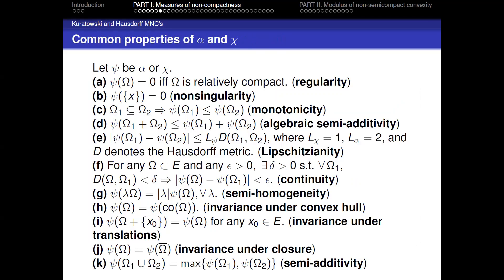There are also common properties of α and χ. Let C be either α or χ. The first property is regularity: C(Ω) = 0 if and only if Ω is relatively compact. Other common properties include non-singularity, monotonicity, algebraic semi-additivity, Lipschitz unity, continuity, semi-homogeneity, invariance under convex hull, invariance under translations, invariance under closure, and semi-additivity.